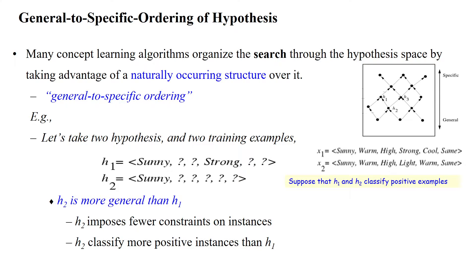Hello everyone, how do we represent the specific hypothesis and general hypothesis in concept learning using notations?